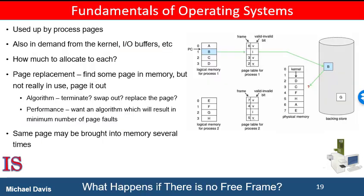When considering page fault rate, we can't assume that each page faults only once when it's first referenced. If a process of ten pages uses only half of them, then demand paging saves the I/O necessary to load the five pages that are never used. We can increase our degree of multiprogramming by running more processes. If five of the pages are never used, we could run eight processes with 40 frames rather than four processes if each required all ten frames. If we run six processes, each ten pages in size but using only five, we have higher CPU utilization and throughput with ten frames to spare.